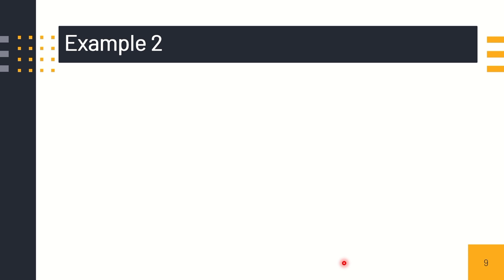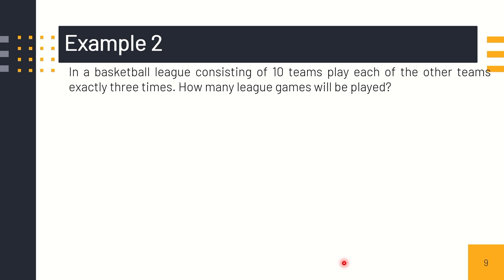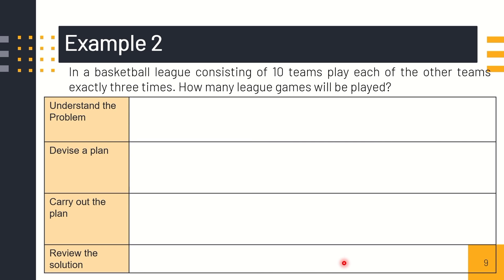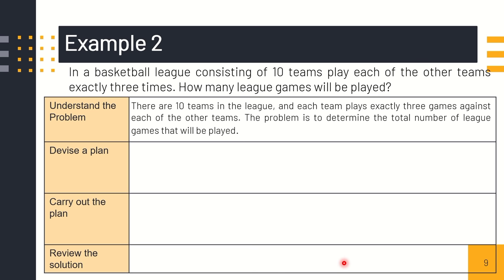For example number two, in a basketball league consisting of ten teams, each team plays each of the other teams exactly three times. How many league games will be played? We'll determine how many league games will be played. First, understand the problem. What can you say about the problem? There are ten teams in the league and each team plays exactly three games against each of the other teams. The problem is to determine the total number of league games that will be played.